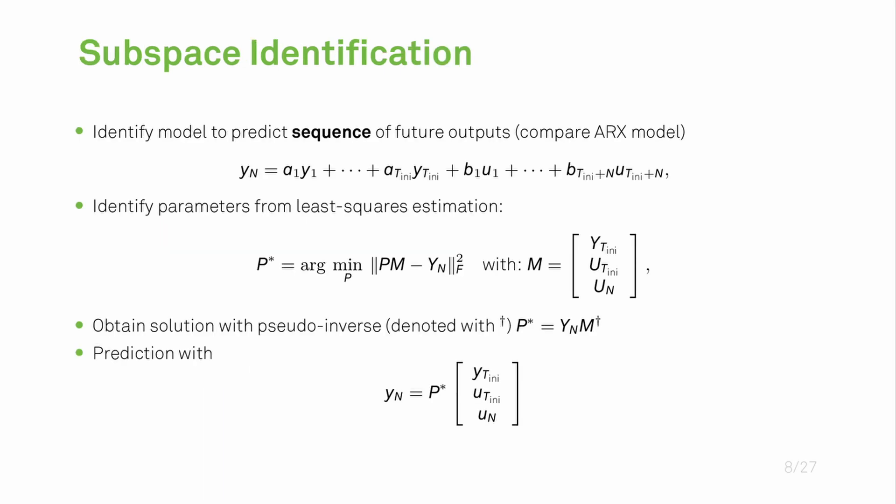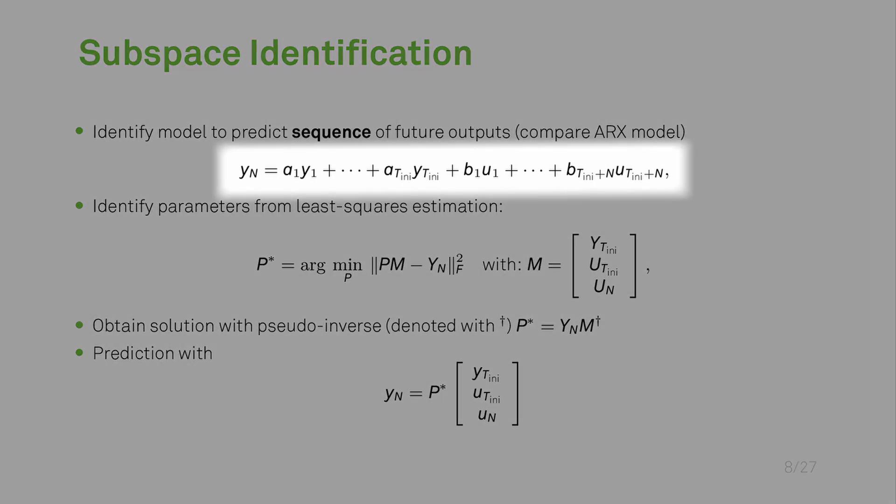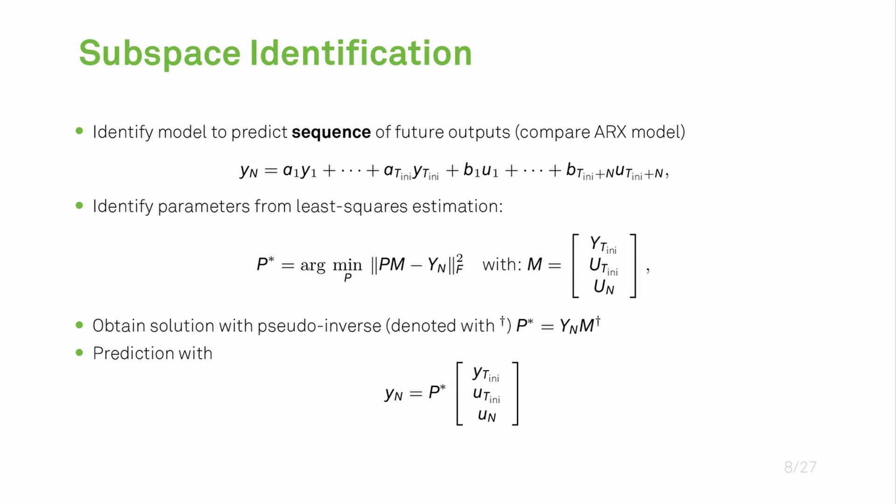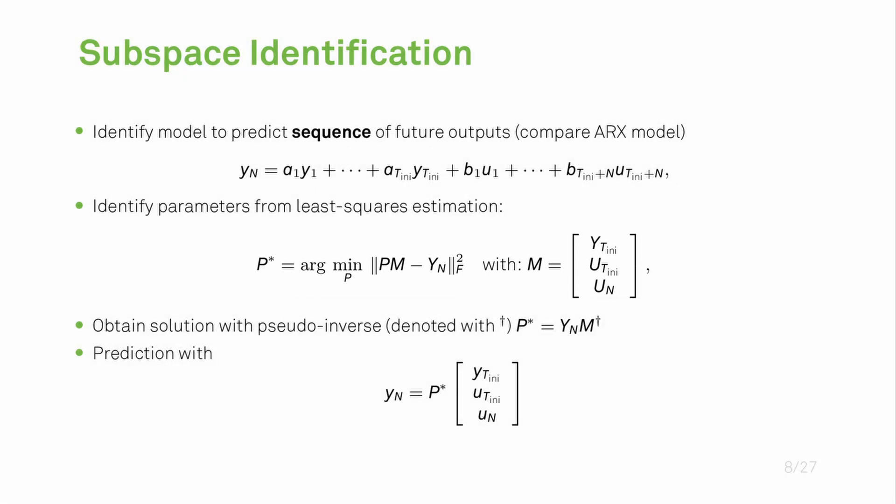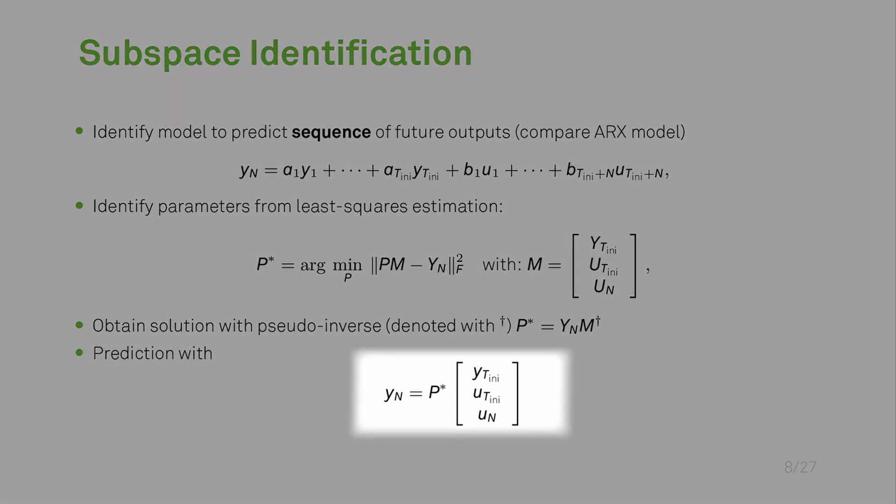A prerequisite for this method is subspace identification, which is about identifying a model that predicts a finite sequence of future outputs of the system. This is very similar to ARX models which only predict a single next output. Both do this in a linear model framework given here. To identify the parameters of this model, we typically formulate the least squares problem shown here at the center. The solution of this problem yields the parameter matrix which we call P, and we can then do the prediction with this expression at the bottom.